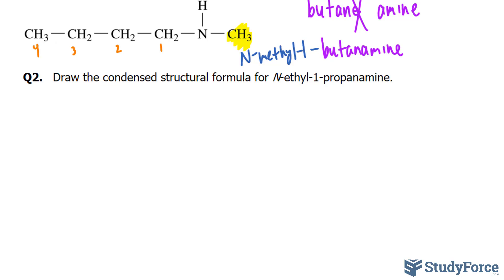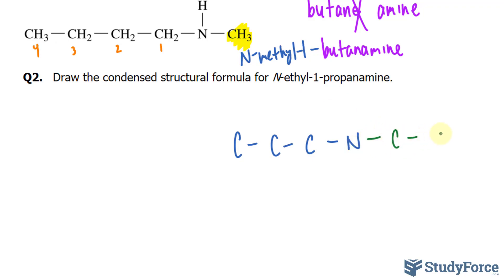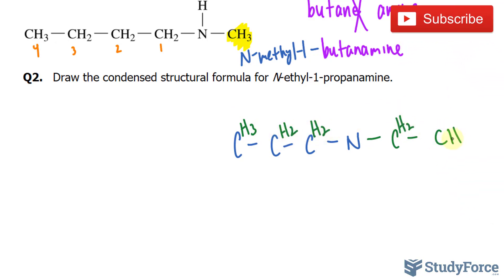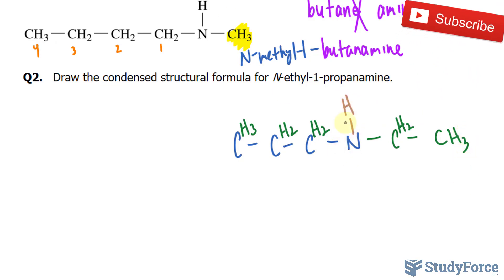Prop means that we have three carbons, so C single-bonded to the nitrogen. N-ethyl means that the substituent is ethyl, which is a two-carbon chain. So I'll write down C-C and fill in the hydrogens — that's H2 and H3. We know that nitrogen should have a hydrogen, and what you see on your screen is the answer.